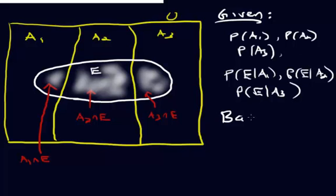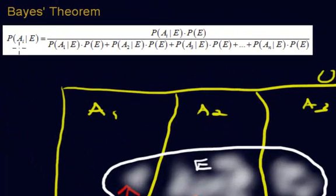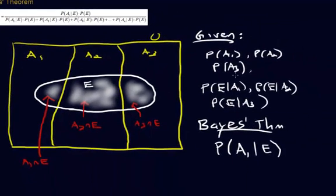Now, what Bayes' theorem answers is the following question: what is the probability of A1 given E? This is normally not given to us — Bayes' theorem finds it. Looking back at the formula, Bayes' theorem finds the probability of A-i given E, so in our example, A1 given E.